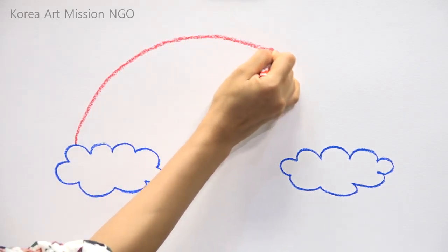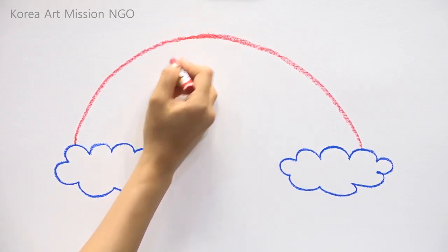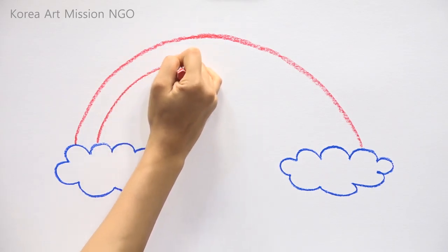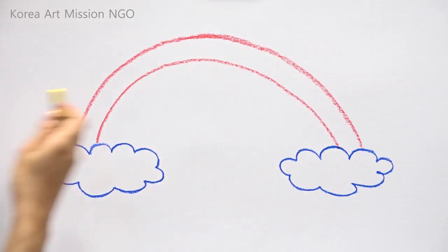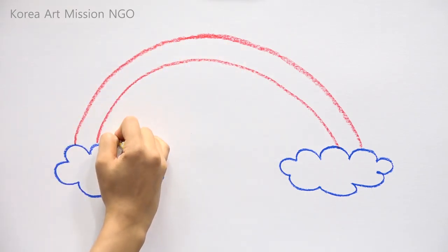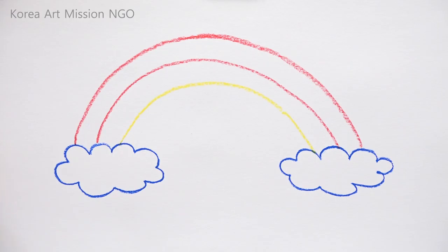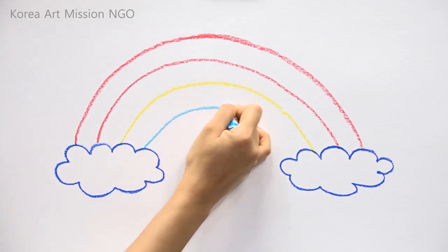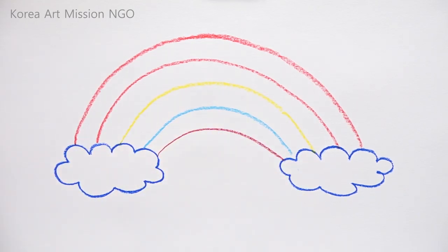So let's start from this cloud and draw it. It starts from the end at the clouds, climbs up, and then comes down to the other clouds. Let's draw the two so that they are both convex downward. This is red. And then the stripe below is yellow. And then there's sky blue.